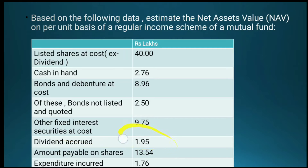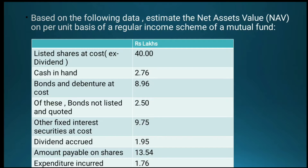Dividend accrued: 1.95 lakhs. Amount payable: 13.54 lakhs. Expenditure accrued: 1.76 lakhs.